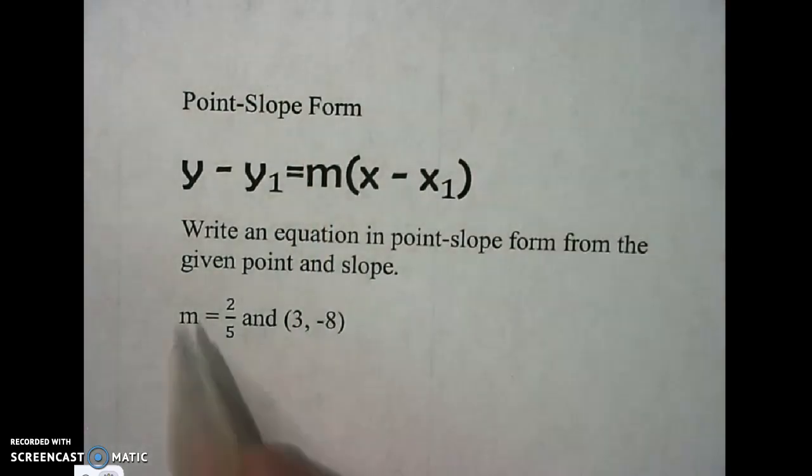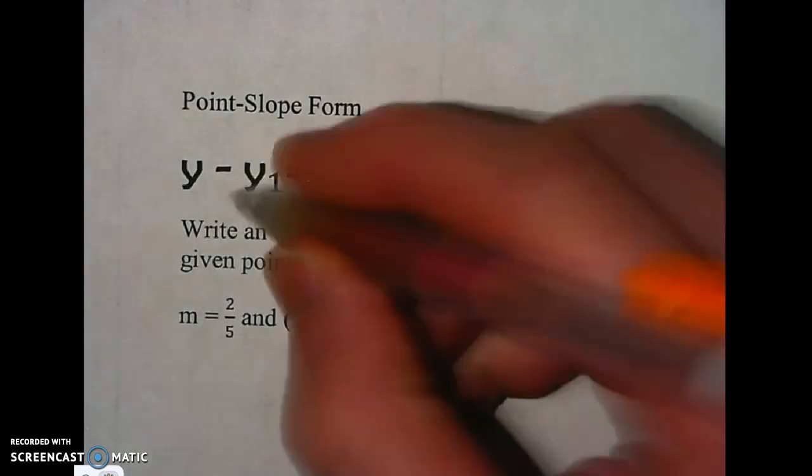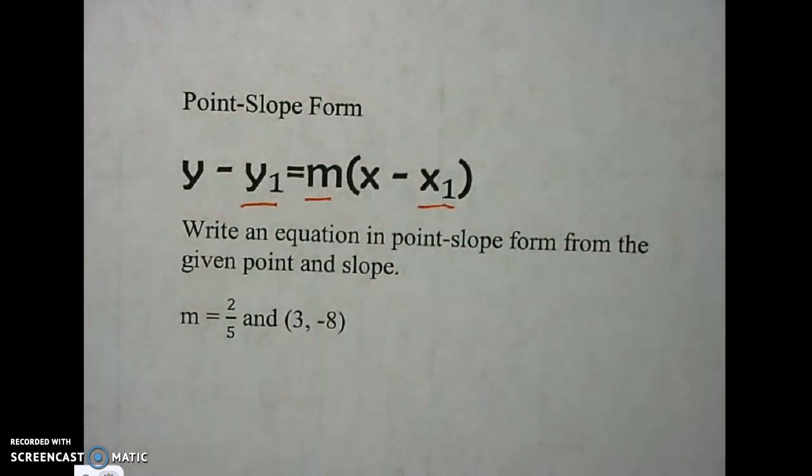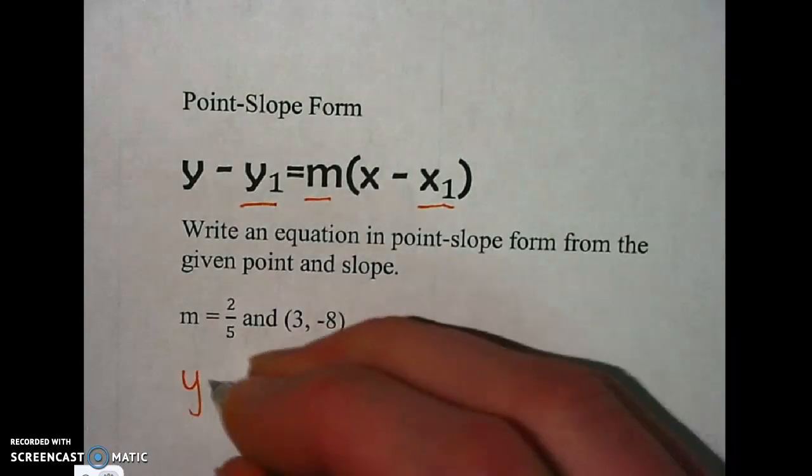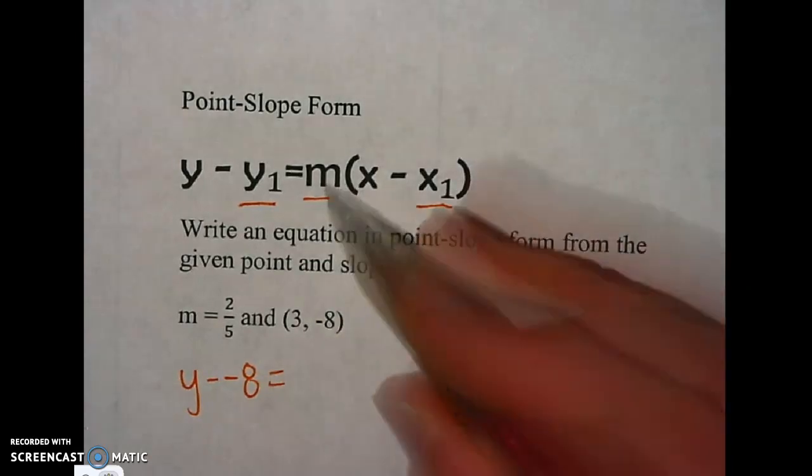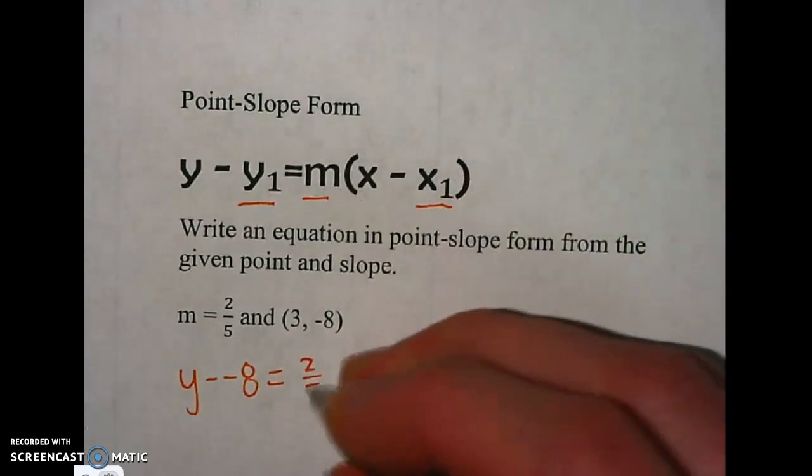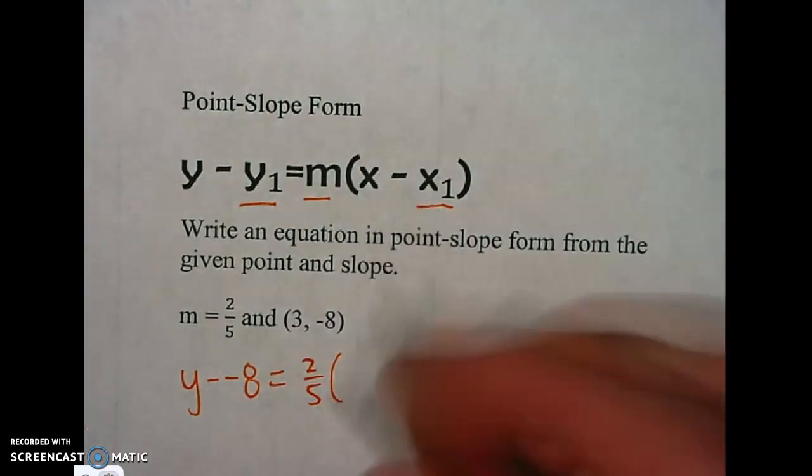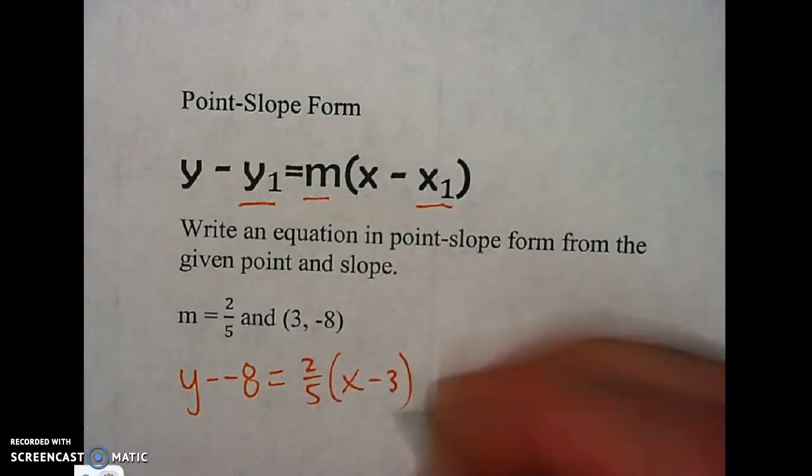So plugging this slope and this point into point slope form. Remember, I'm plugging in my y value, my m, and my x value. So that's y minus minus 8, right there, equals my m, which is 2 over 5. And then x minus my x value. My x value is 3. And there we go.